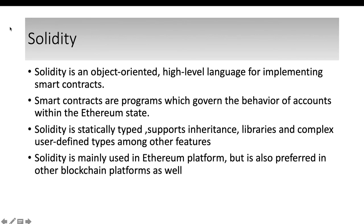Solidity has many types including enums, numeric types, date types, string types, booleans, and structs where you can define your own custom types. Similar to a class in Java, in Solidity you define a 'contract'. The first line of every Solidity smart contract defines the version using 'pragma solidity' followed by the version number. I'll now walk through a simple Solidity program to show how it works.